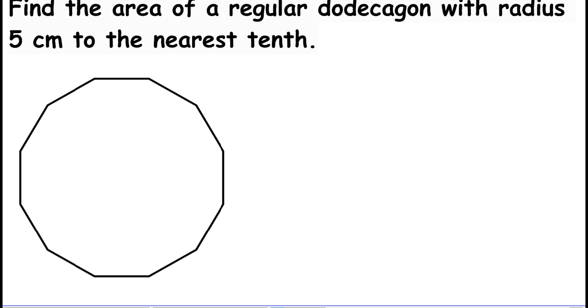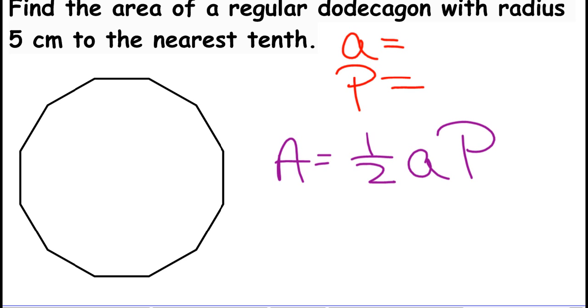All right. So when we find the area of a regular dodecagon, when we find the area of any regular polygon, we have to have two things. We have to have the apothem and we have to have the perimeter because remember, we are using area equals one half apothem times perimeter. That is our formula that we use.